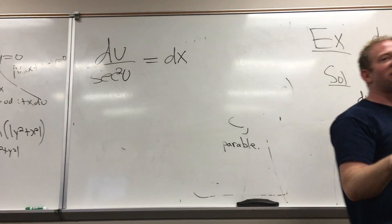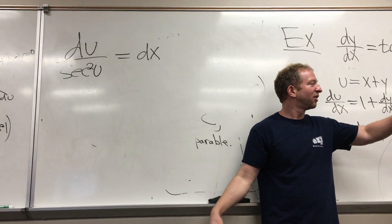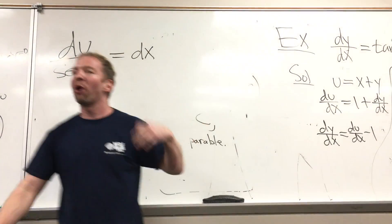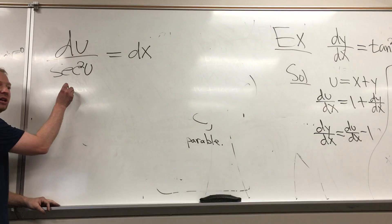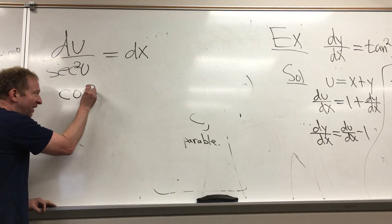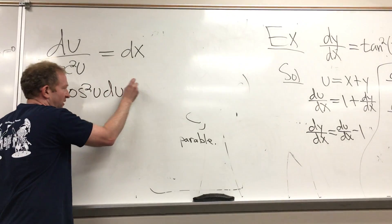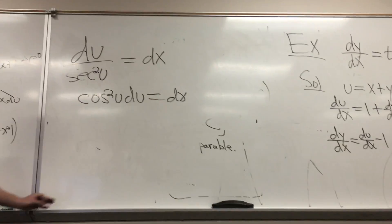But wait a minute, the secant function is 1 over what? Cosine. So 1 over secant squared is going to be cosine squared. So now we've eliminated the nasty secant function.